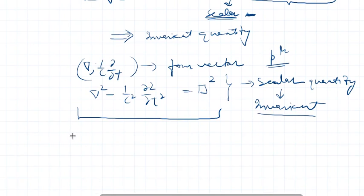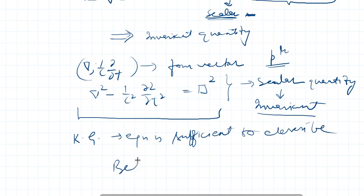This Klein-Gordon equation is sufficient to describe the behavior of spin-zero particles. Now, in the next lecture I will talk about the physical interpretation of this Klein-Gordon equation. This Klein-Gordon equation was not acceptable in the early stages, so let us have a look at that in the next lecture. That's all for this lecture.